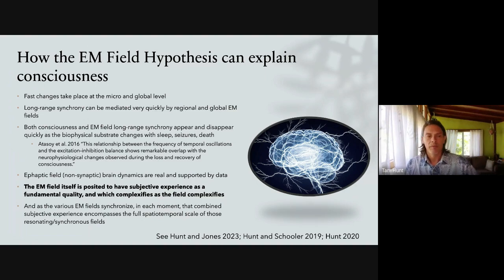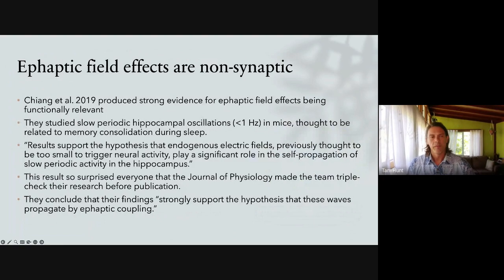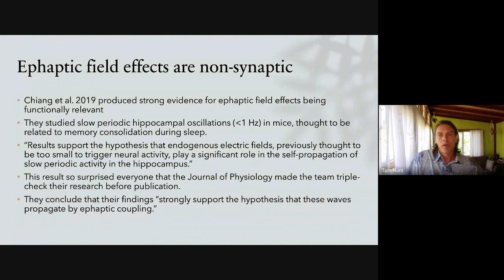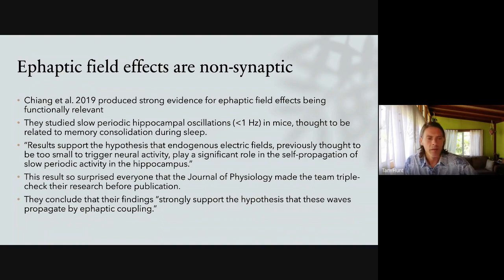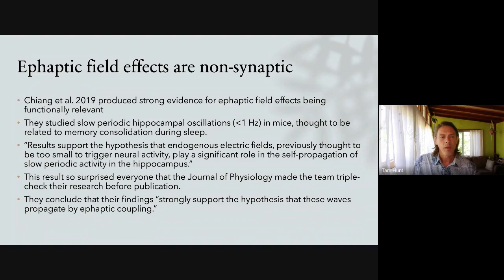There is now an increasing body of research showing that ephaptic effects are real. The question is still how strong these effects are and whether they have a real function in the brain — are they epiphenomenal or functional? A major paper on ephaptic effects came out in 2019, Chang et al., which looked at slow periodic hippocampal oscillations in mice. They conclude that results support the hypothesis that endogenous electric fields, previously thought to be too small to trigger neural activity, play a significant role in the self-propagation of slow periodic activity in the hippocampus. The journal made them triple-check the research before publication, and it panned out. They conclude that these findings strongly support the hypothesis that these waves propagate by ephaptic coupling.